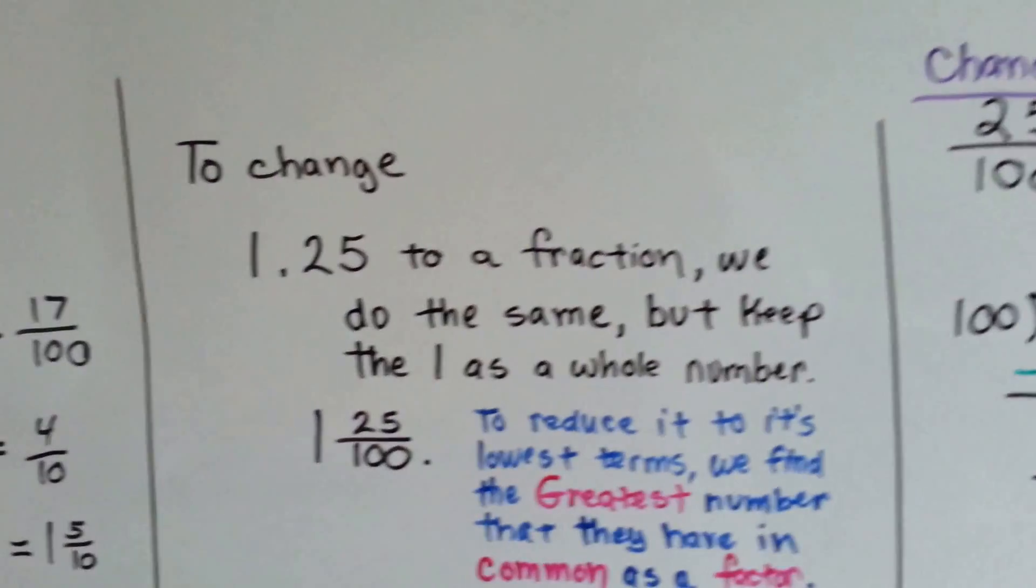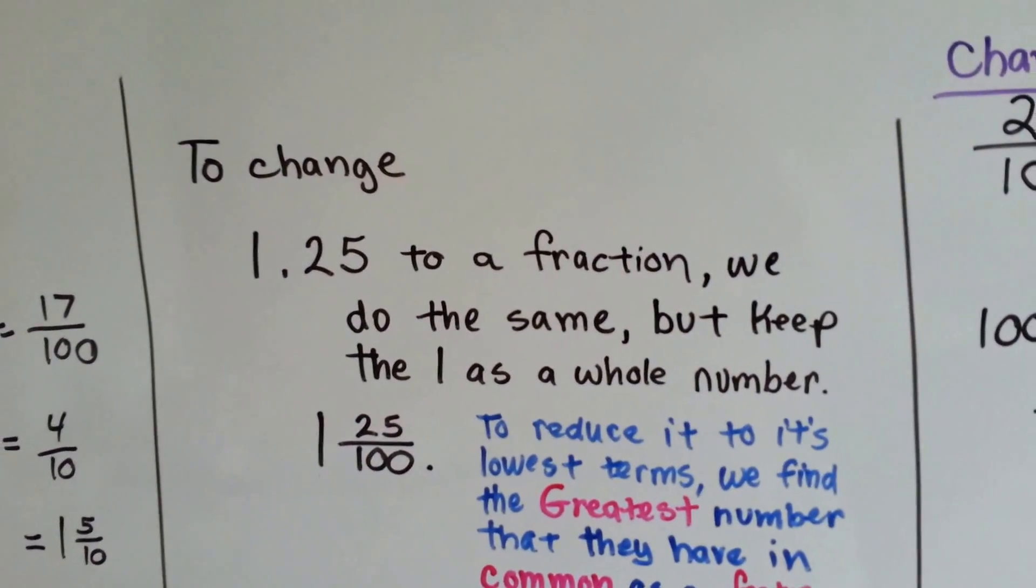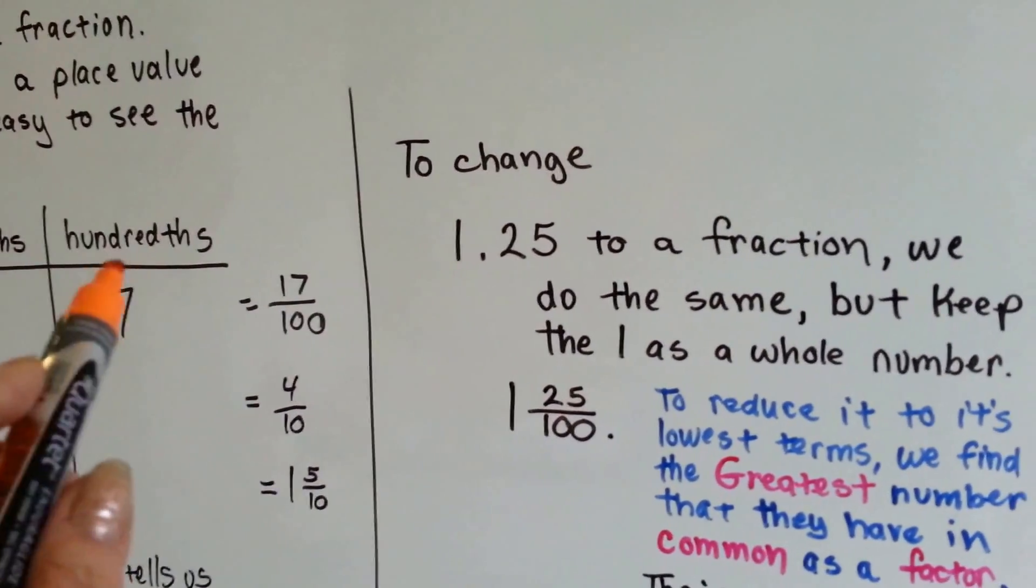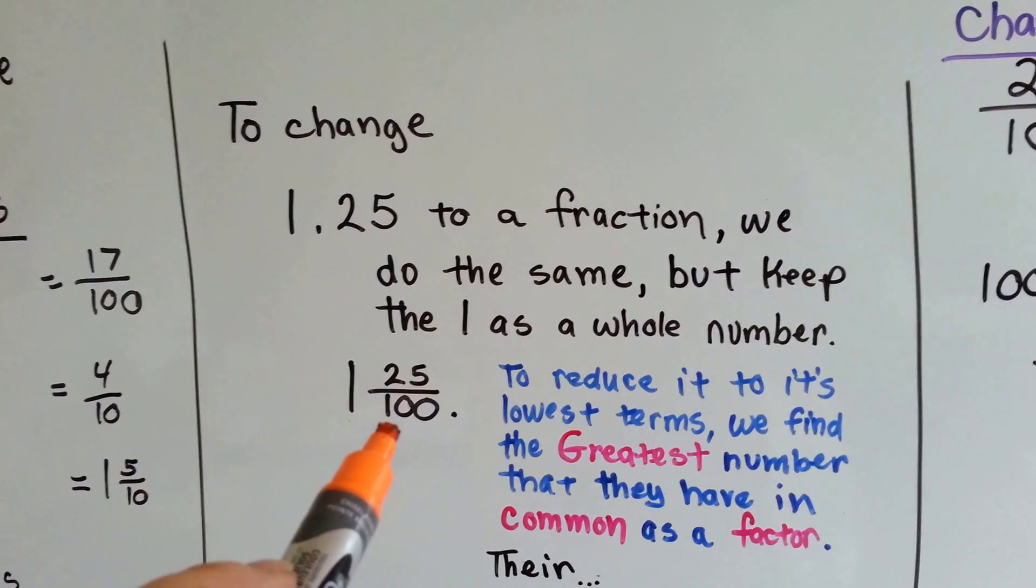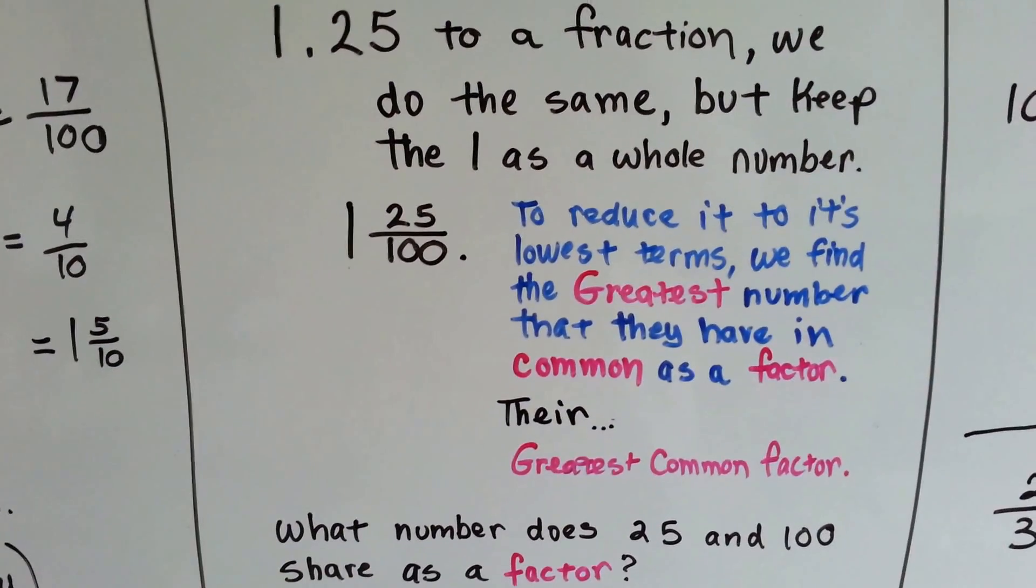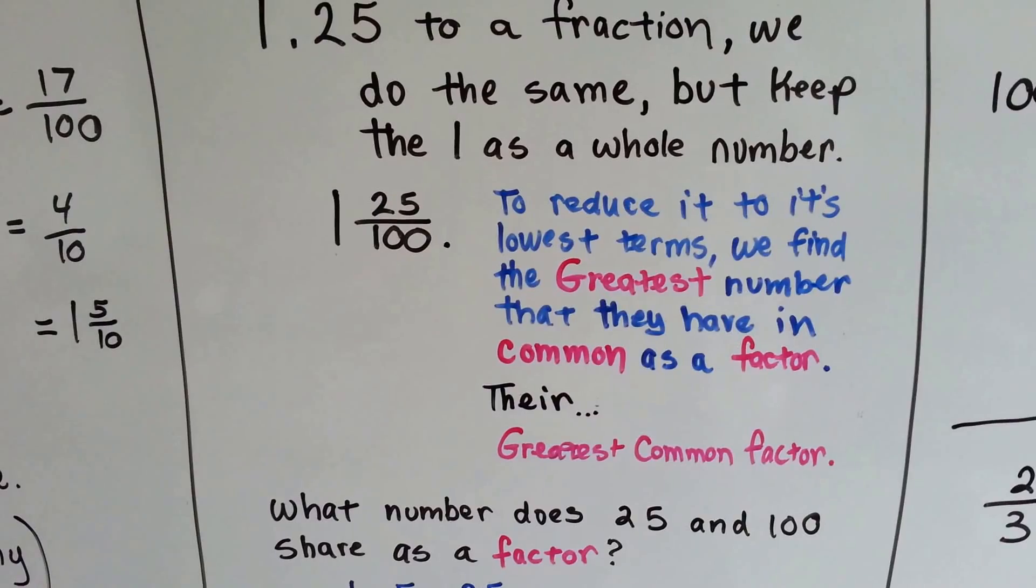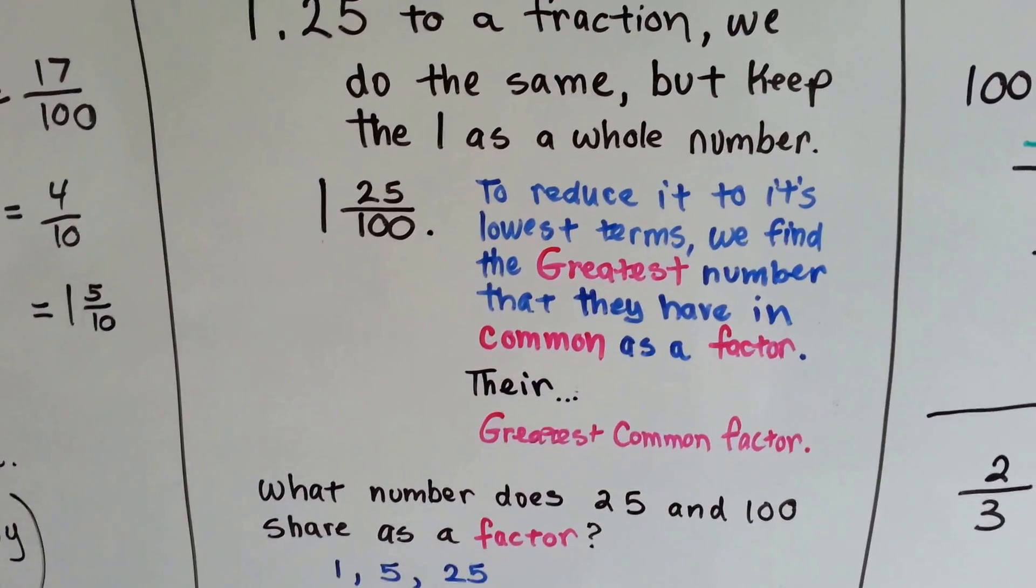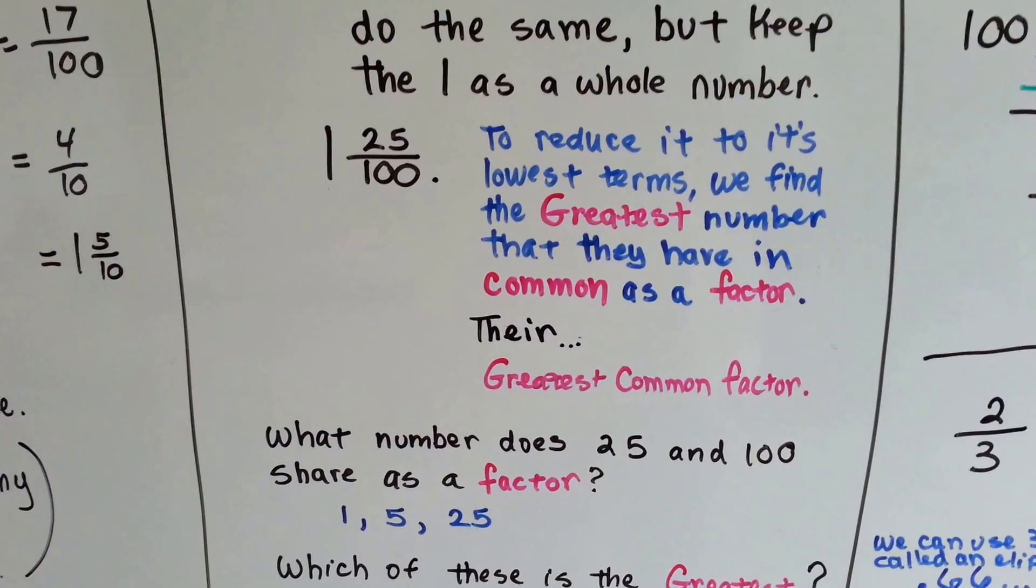To change one and twenty-five hundredths to a fraction, we do the same thing. We know that it's twenty-five hundredths, so we put the twenty-five over a hundred. But it needs to be reduced to its lowest terms. We need to find the greatest number that they have in common as a factor, or their greatest common factor. So what do the twenty-five and the hundred have in common?